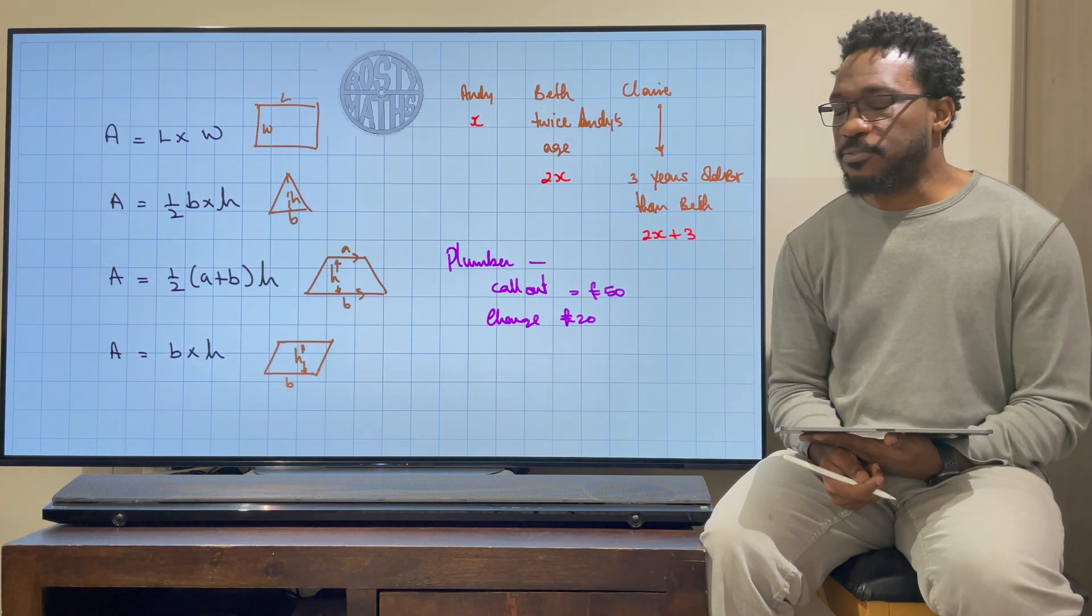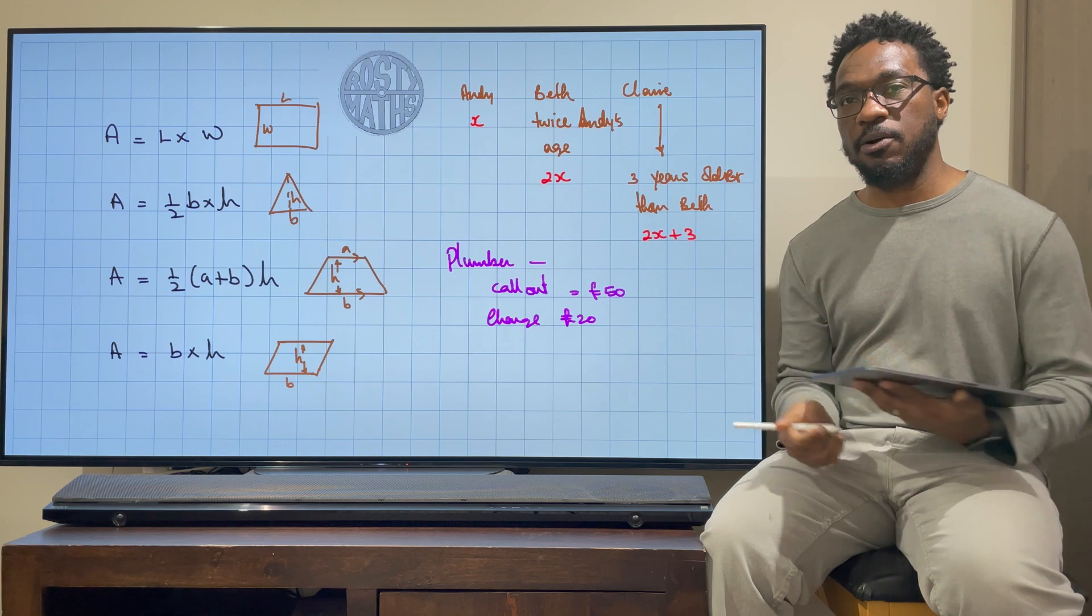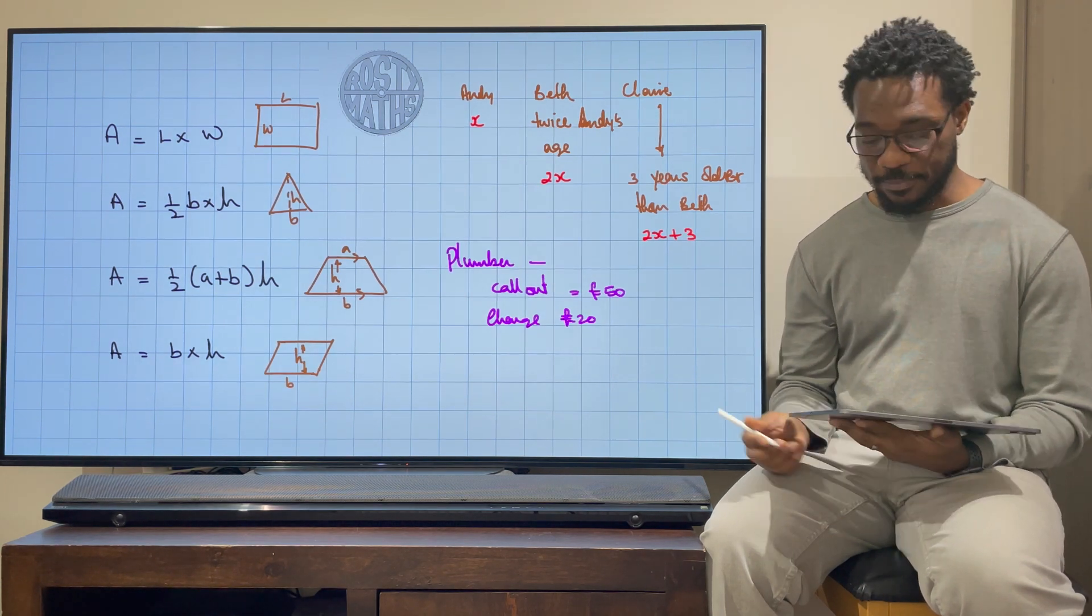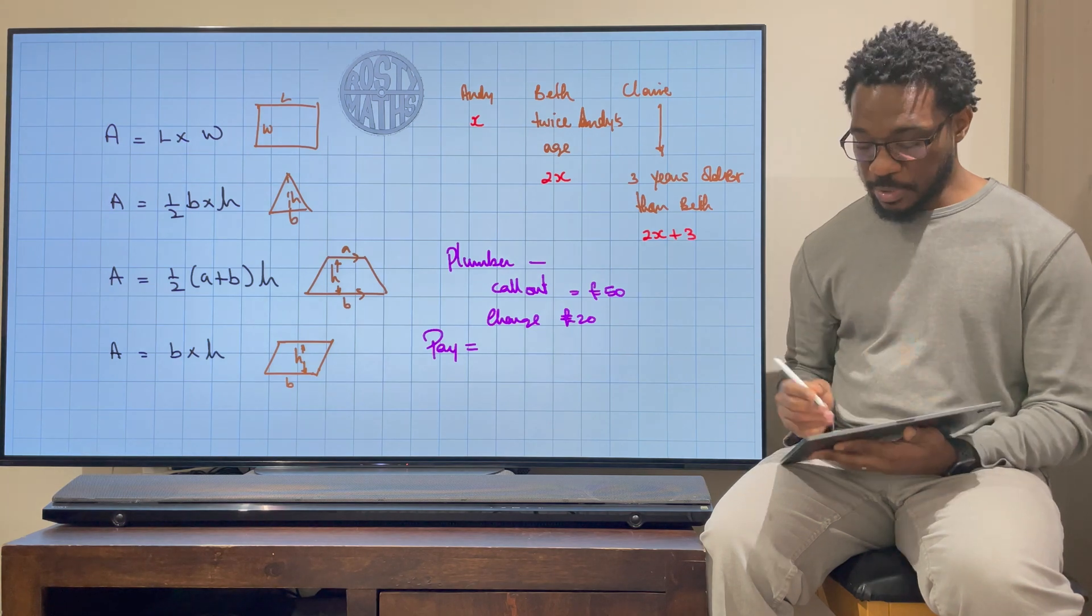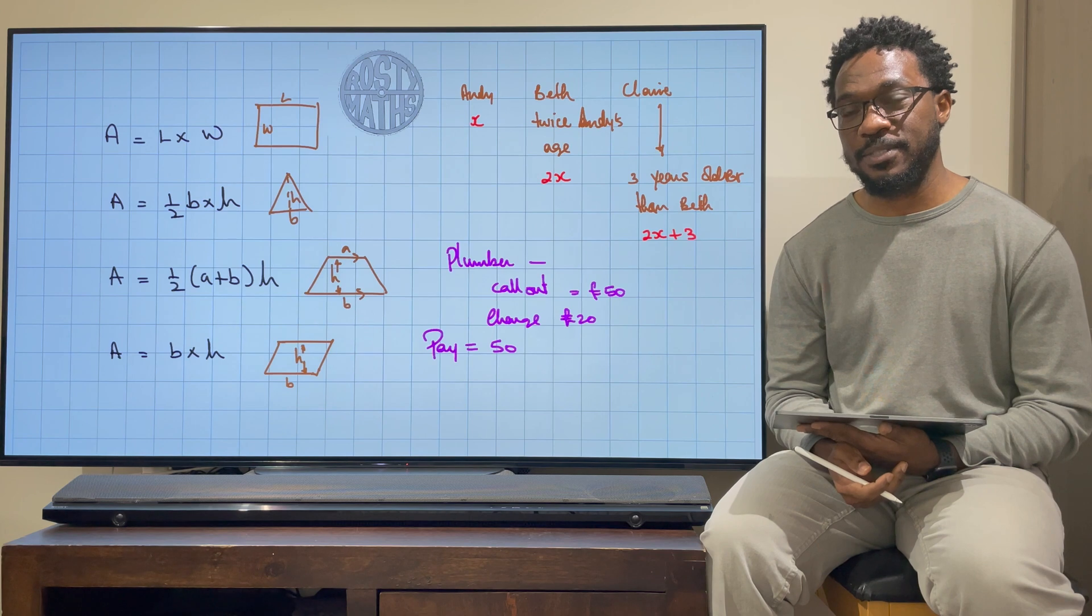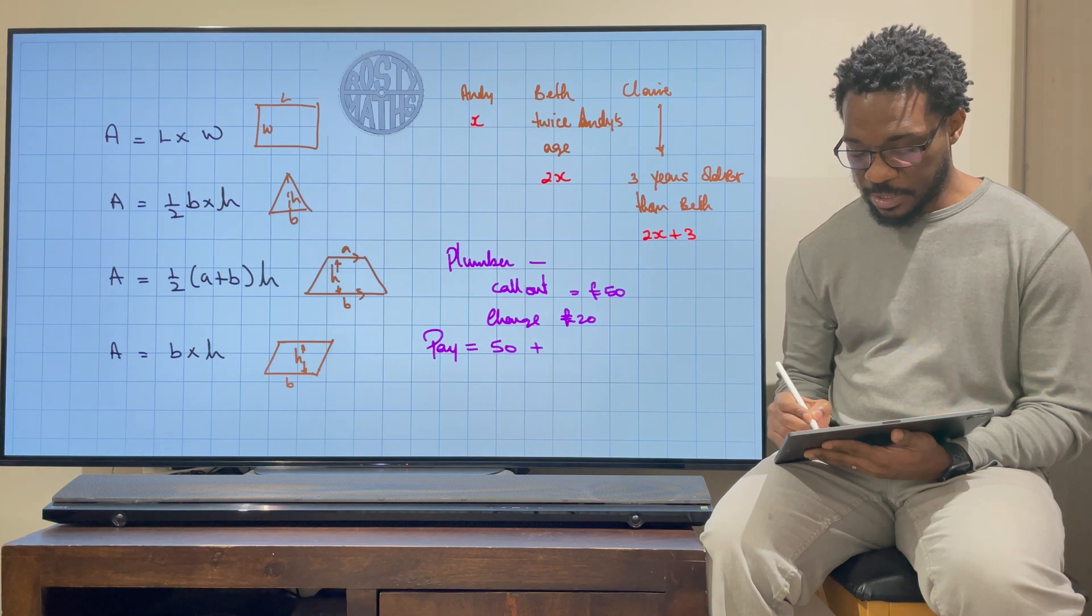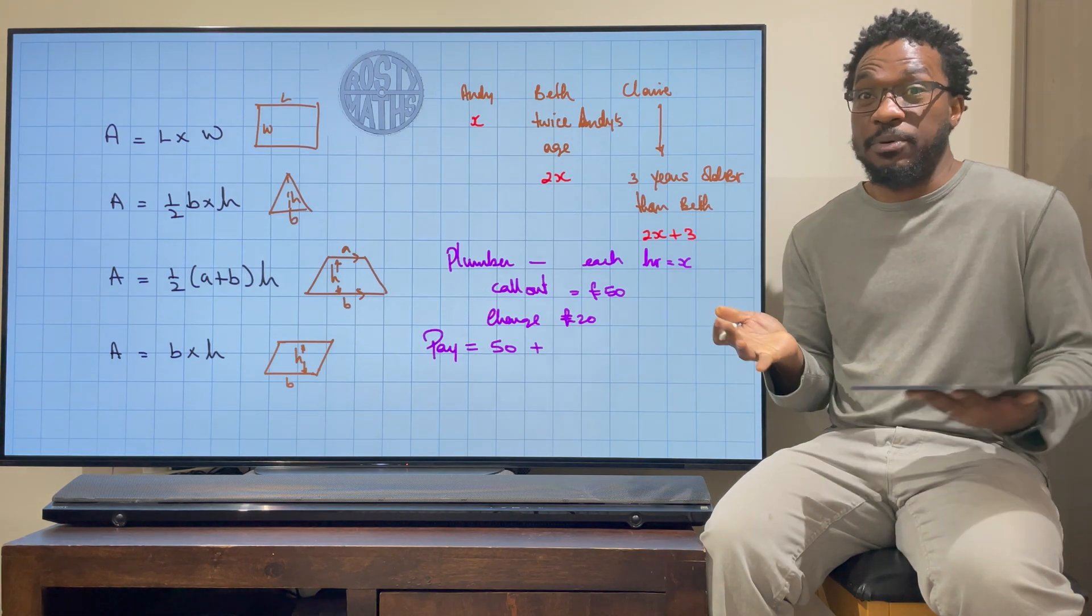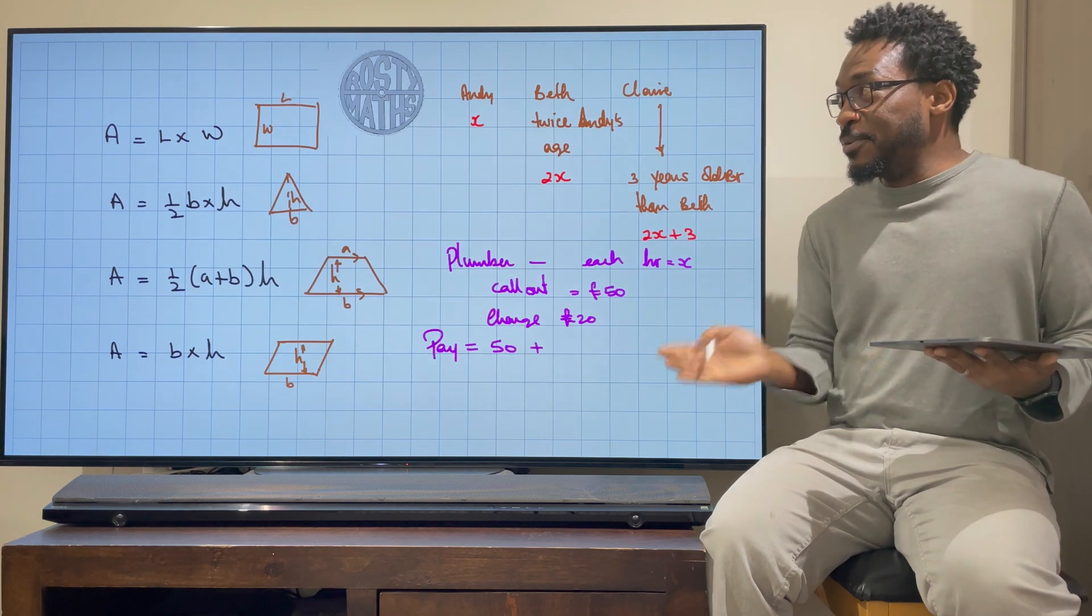So now we need to write a formula so that we can work out how much this plumber is going to charge you depending on how long he stays at your house. Okay, well let's go work it out. So the money that you have to pay—this is my formulae now—well as soon as he arrives at my door, I'm going to have to pay him £50 because that's his call-out fee. So that goes in straight away. And then on top of that, if he charges £20 an hour, let's just say that each hour is X. So I'm going to say X hours. I don't know how many hours he's going to be at my house. I'm going to call it X hours. If you don't know, call it X.